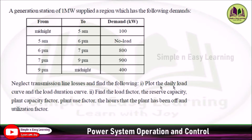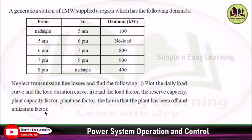First, plot the daily load curve and load duration curve. Second, find the load factor. Third, the reserve capacity. Fourth, plant capacity factor. Fifth, plant use factor. Sixth, the hours that the plant has been off, and the utilization factor.